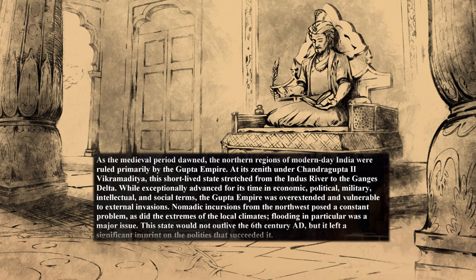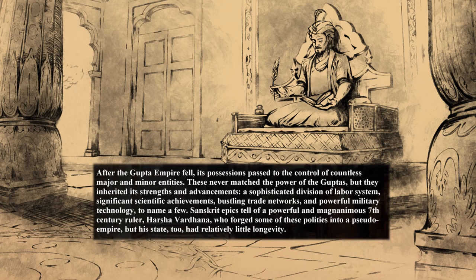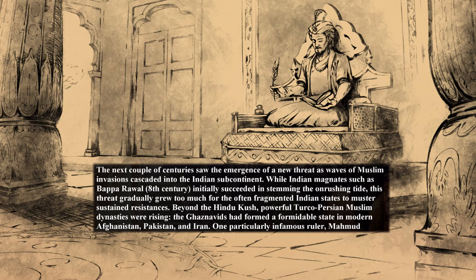The Gupta Empire left a significant imprint on the polities that succeeded it. After it fell, its possessions passed to the control of countless major and minor entities that never matched Gupta power but inherited its strengths — a sophisticated division of labour system, significant scientific achievements, bustling trade networks, and powerful military technology. Sanskrit epics tell of a powerful 7th century ruler, Harsha Vardhana, who forged some of these polities into a pseudo-empire, but his state too had relatively little longevity. The next couple of centuries saw the emergence of a new threat as waves of Muslim invasions cascaded into the Indian subcontinent. While Indian magnates such as Bapa Rawal initially succeeded in stemming the tide, this threat gradually grew too much for the often fragmented Indian states to muster sustained resistance.